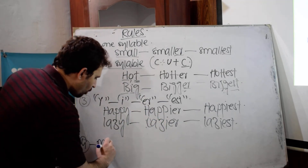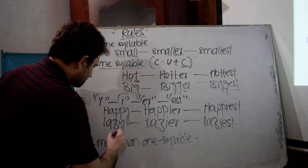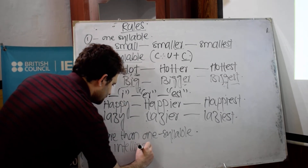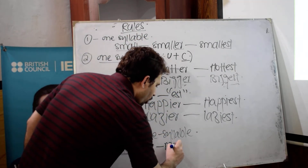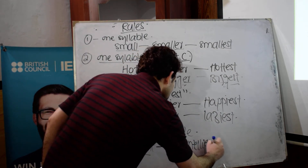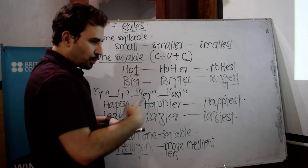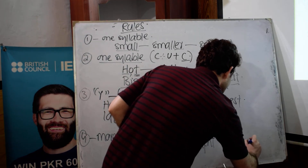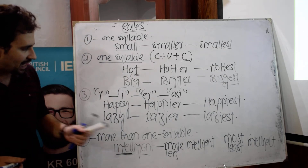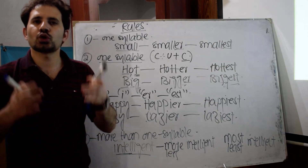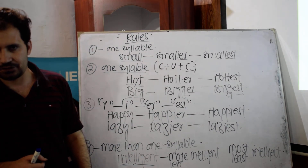Rule number four: if an adjective has more than one syllable — for example, 'intelligent' — to change to comparative, put 'more' before it: 'more intelligent,' or for the negative form use 'less': 'less intelligent.' For superlative, put 'most': 'the most intelligent student in the class,' or 'least': 'the least intelligent student in the class.' So for adjectives with more than one syllable, use more/less for comparative and most/least for superlative.